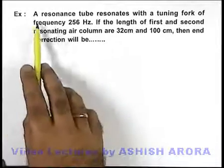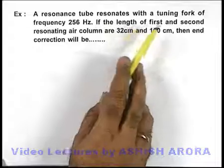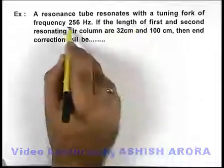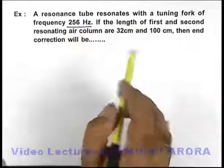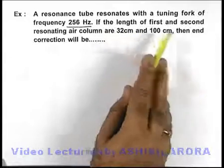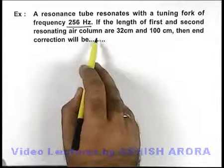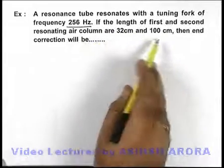In this example, it is given that a resonance tube resonates with a tuning fork of frequency 256 hertz, and it is also given that the length of first and second resonating air columns in the tube are 32 and 100 centimeters.